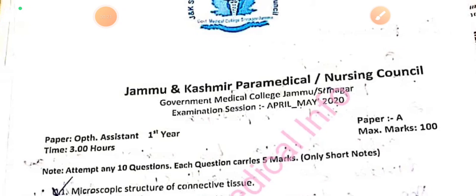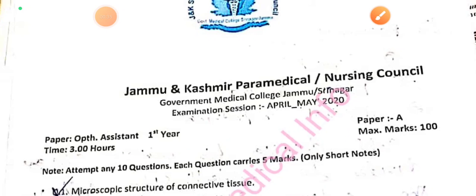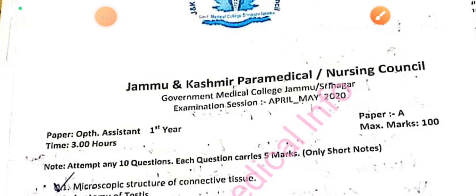You will also get the ophthalmic assistant content in the playlist, along with all your course-related materials and previous year question papers. You have a timing of 3 hours, maximum marks, and according to the 2020 pattern, you had to attempt 10 questions. Each question was 5 marks and you had to write a short answer.